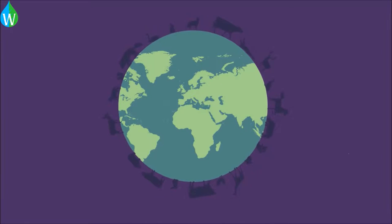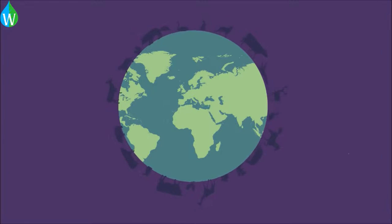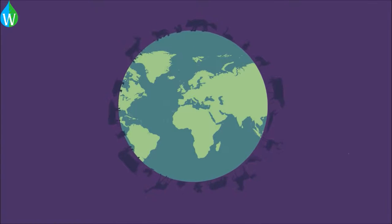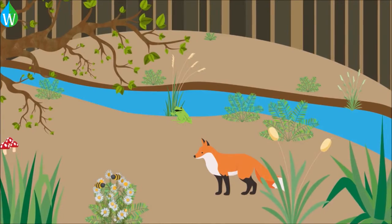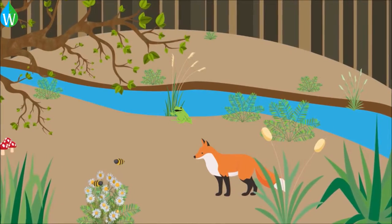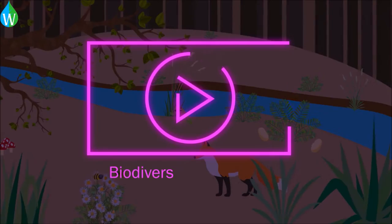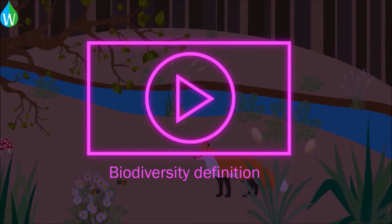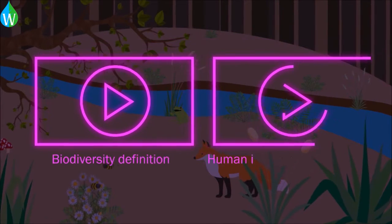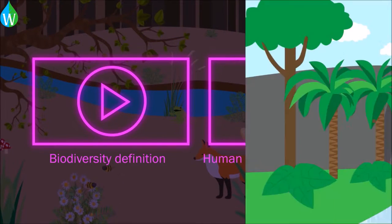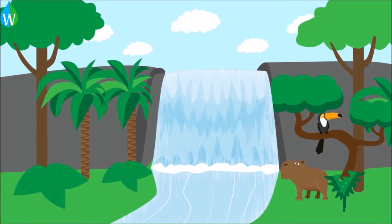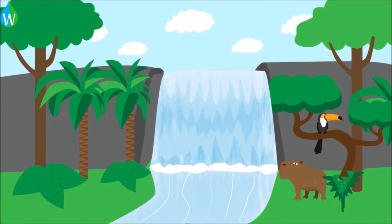Biodiversity is the variety of life. It can be studied on many levels, from looking at all of the 8.7 million species on our planet to a specific ecosystem like a patch of woodland. We looked at biodiversity and the human impacts on biodiversity in previous videos. In this video, we're going to look at the importance of biodiversity to humans.